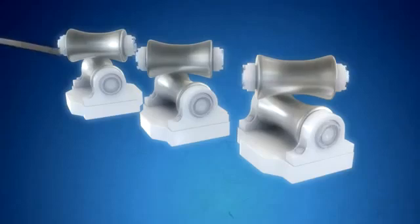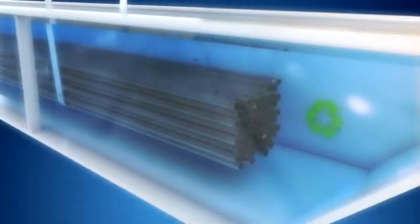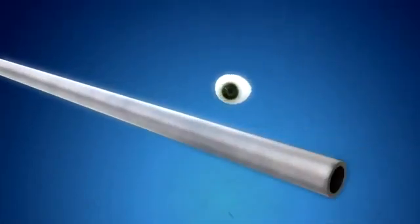The extruded tubes are rapidly straightened and pickled in acid to remove glass and metal oxides. After deburring, dimensional checking, and inspection, the tubes are ready for final production.